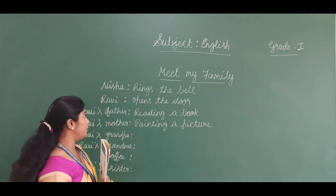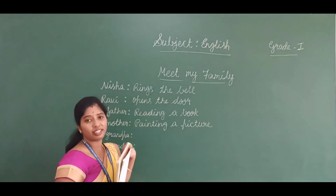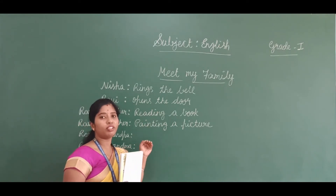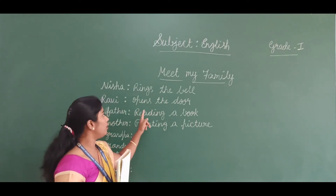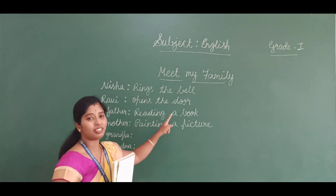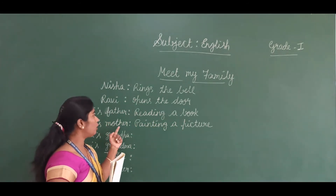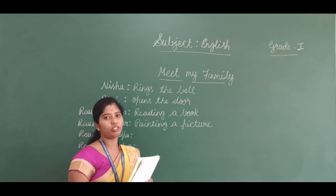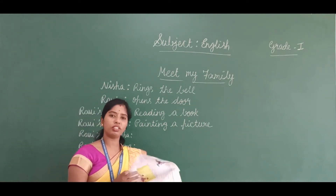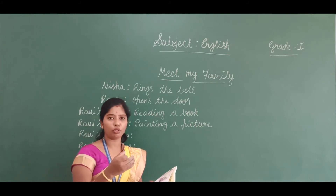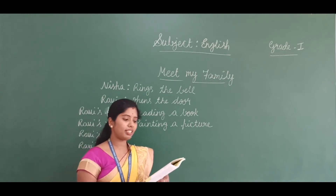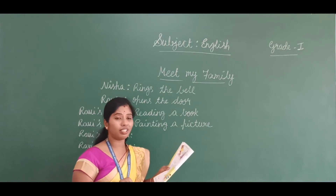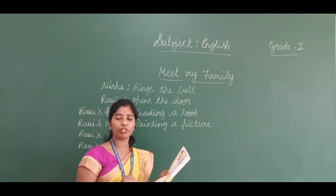Once again — when Nisha rings the bell, Ravi opens the door and wants to introduce his family members. First he introduces his father; he is reading a book. Next he introduces his mother; she is painting a picture. Then he introduces the grandparents. Grandpa and Grandma are playing with Toffee.